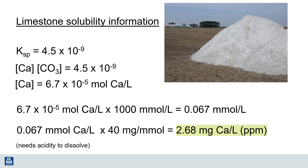Let's dig a little deeper into the chemistry of how these calcium minerals dissolve in order to meet the nutritional needs of plants. We can go through the chemical calculations of what we call the solubility product to determine what the calcium concentration will be as these minerals dissolve. For limestone, when you dissolve it in water, it releases 2.68 milligrams of calcium per liter, or parts per million. Limestone will dissolve more quickly in the presence of acidity, which is why we use limestone to neutralize acid soils.